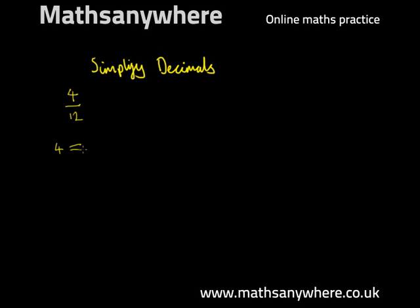So 4 has the following factors. Does 1 go into 4? Yes it does, 4 times. Does 2 go into 4? Yes it does twice. Does 3 go into 4? No it doesn't. And does 4 go into 4? Yes it does, just once.